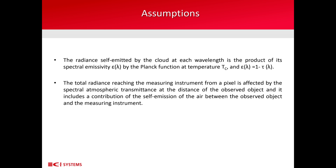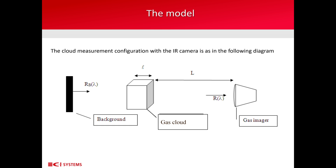Epsilon is equal to 1 minus tau of lambda. The total radiance reaching the measuring instrument from a pixel is affected by the spectral atmospheric transmittance at the distance of the observed object, and it includes a contribution of the self-emission of the air between the observed object and the measuring instrument. The cloud measurement configuration with the IR camera is as in the diagram shown here. On the left side is a background self-emitting radiation called Rb of lambda. The arrow shows the direction to which this radiation is emitted. In the middle of the figure there is a parallelepiped that stands to designate a cloud.